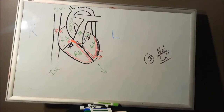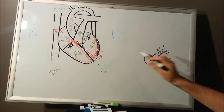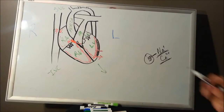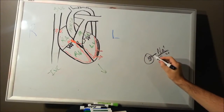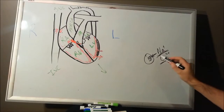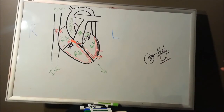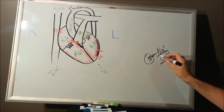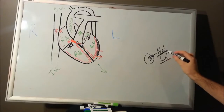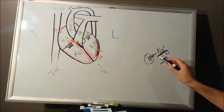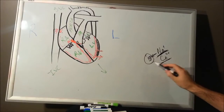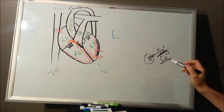So what happens to this cell? Only in these pacemaker cells, you're going to have a small channel called a funny channel that's going to continuously leak in sodium. Not too fast, but it is going to leak in this positively charged ion, sodium. What that's going to do is make the cell more positive.